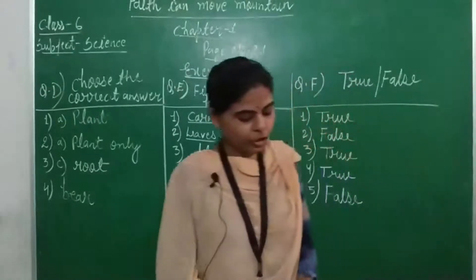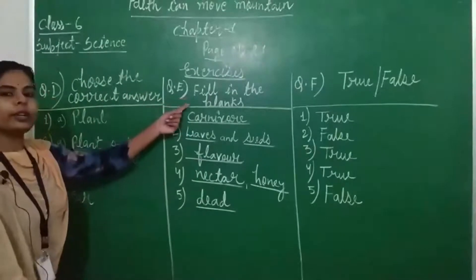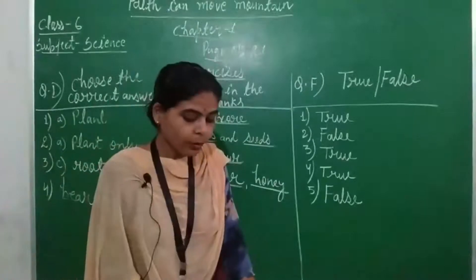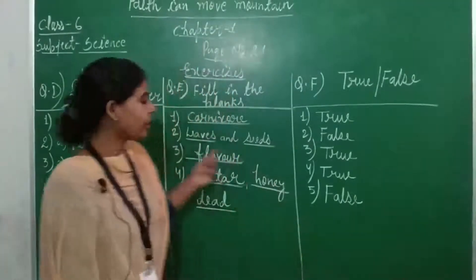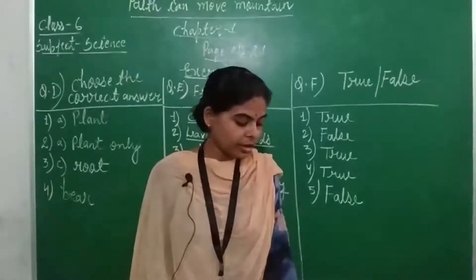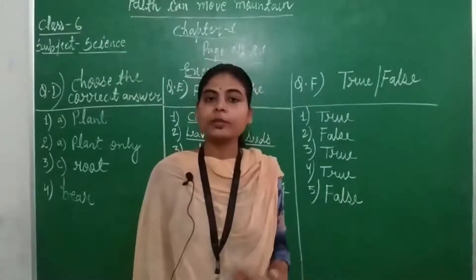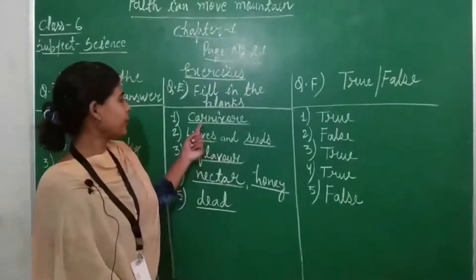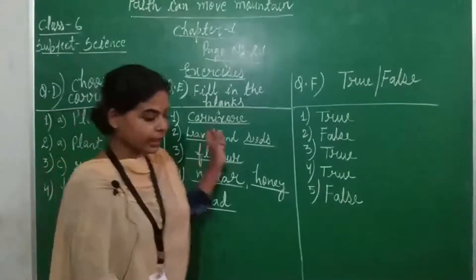Students, now come to question number E on page number 22 — fill in the blanks. First blank: what eats the flesh of other animals? Carnivore. Fill in the blanks — carnivore. Fill in your blanks.